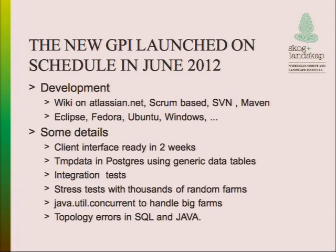The new GPI application was launched in June 2012. Development was Scrum-based; we used SVN and Maven. Maven is very efficient - it solves a lot of problems, creates some, but solves most. People were developing on Windows, Fedora, and Ubuntu with no problems. To get the system up, we had a client interface ready in about two weeks, done by using XSDs and Spring to generate web services.